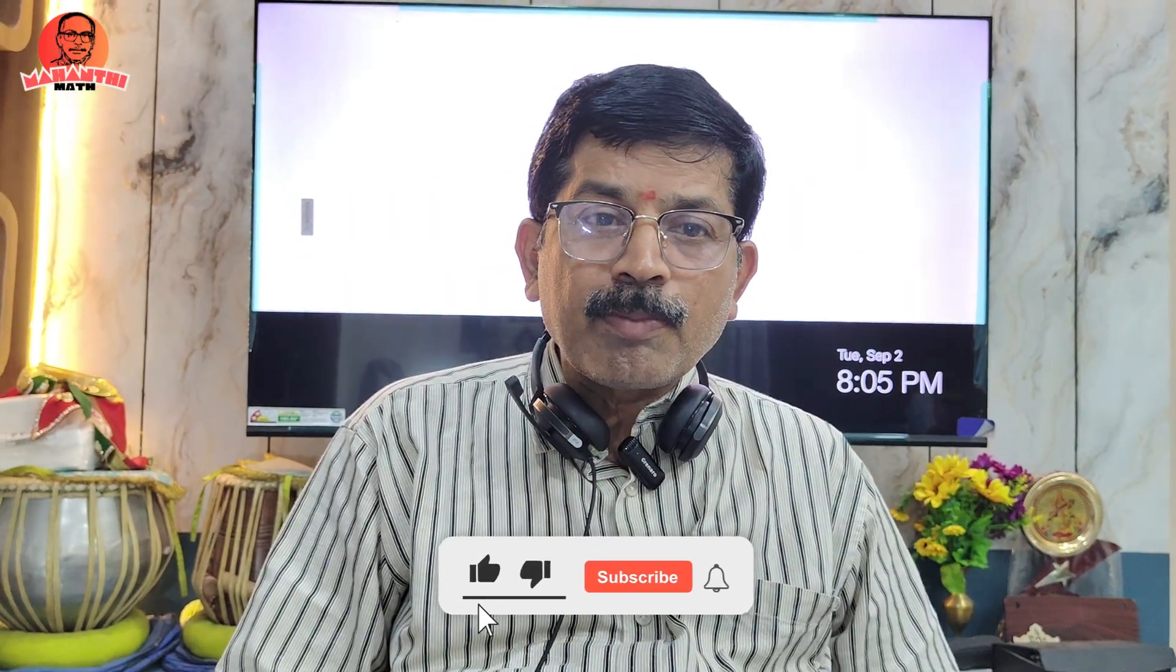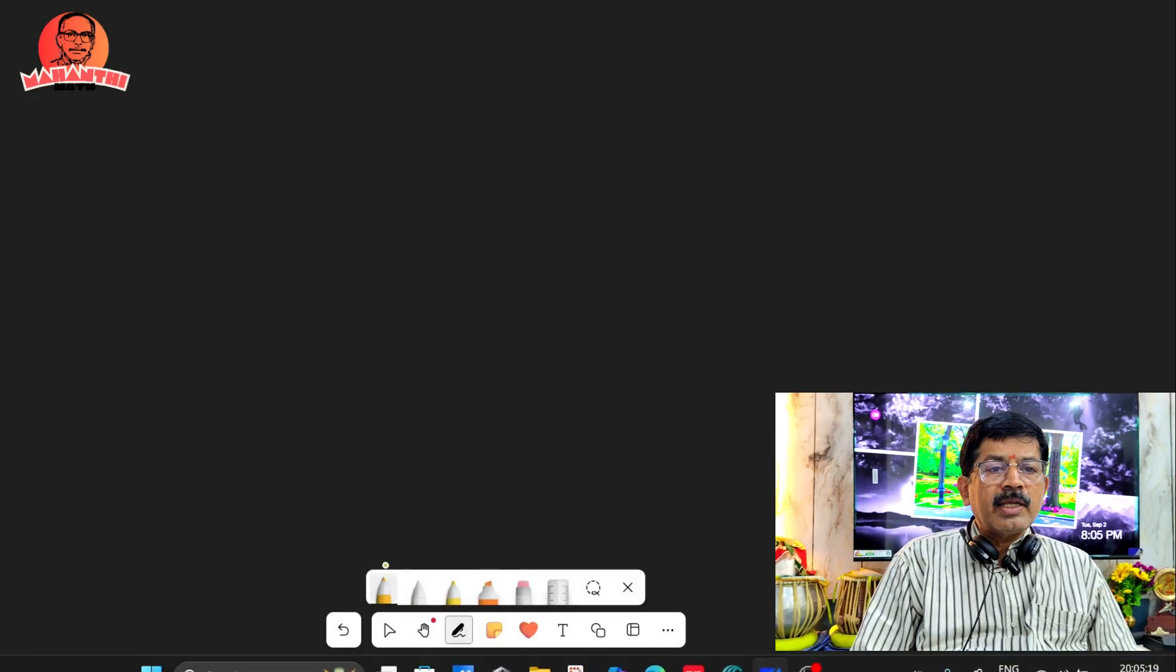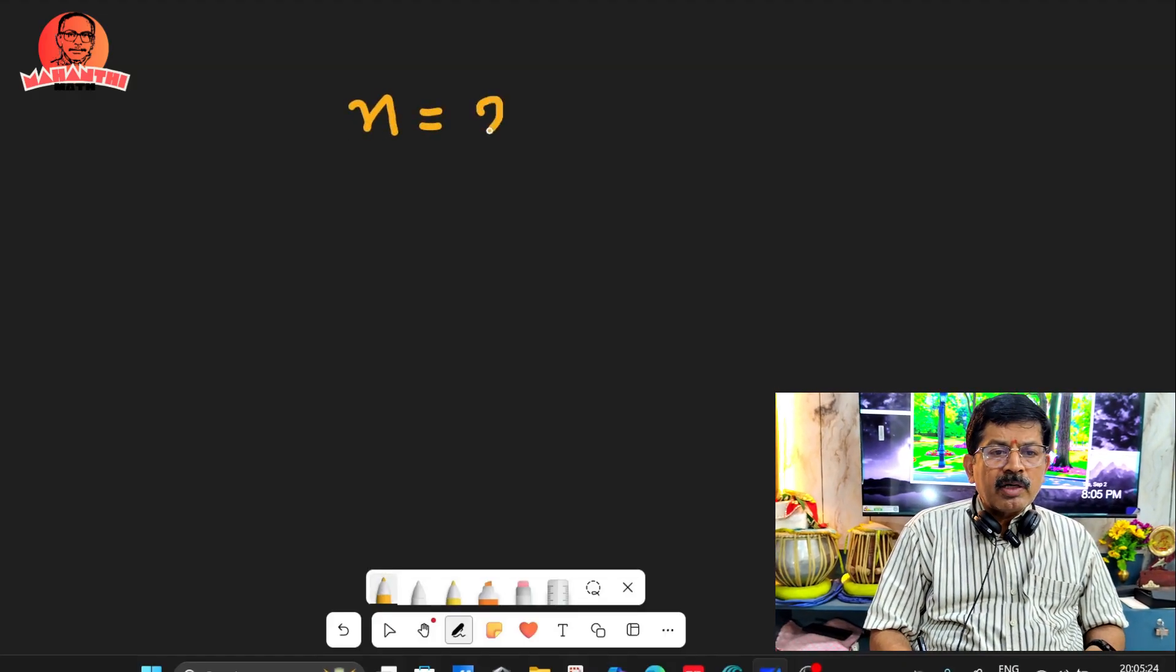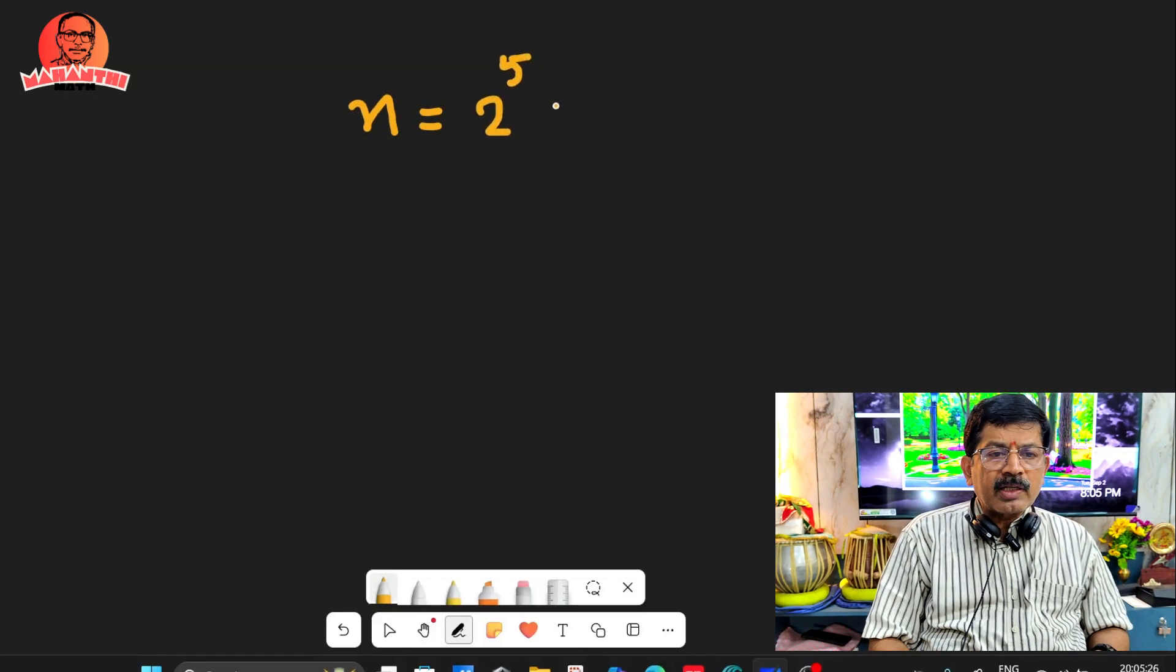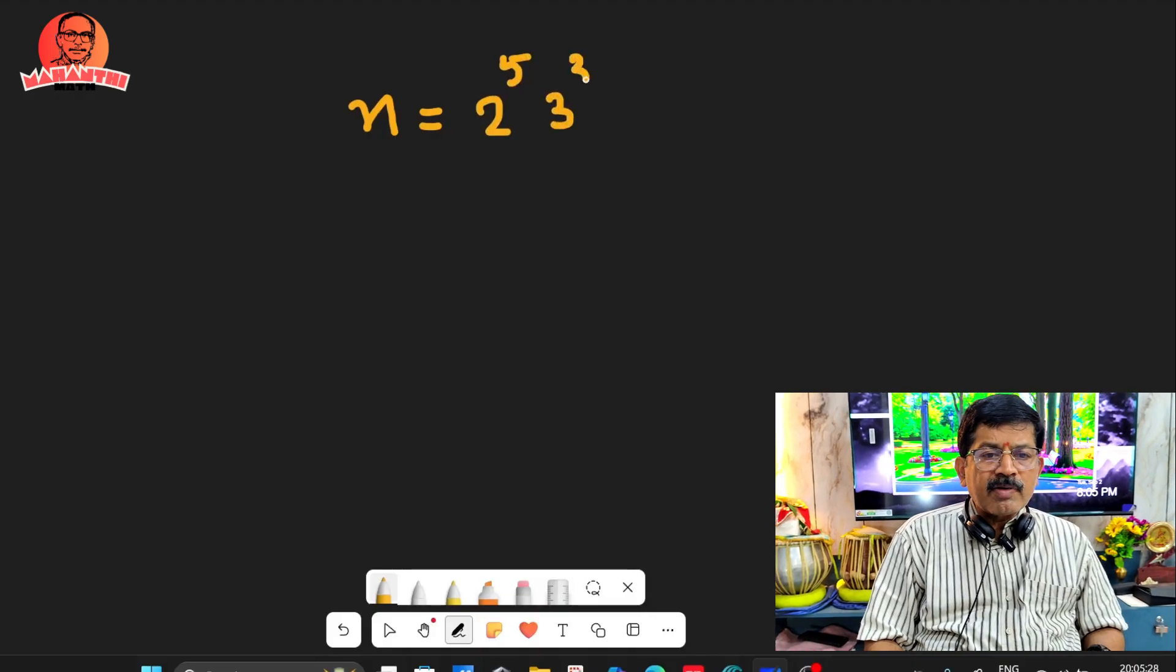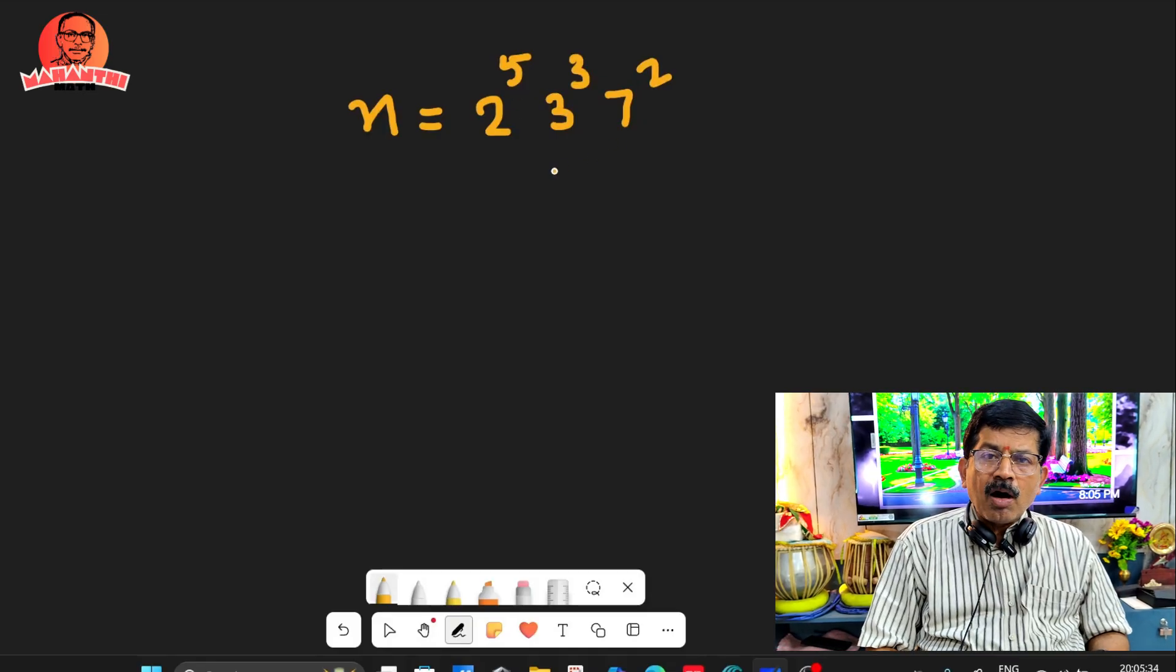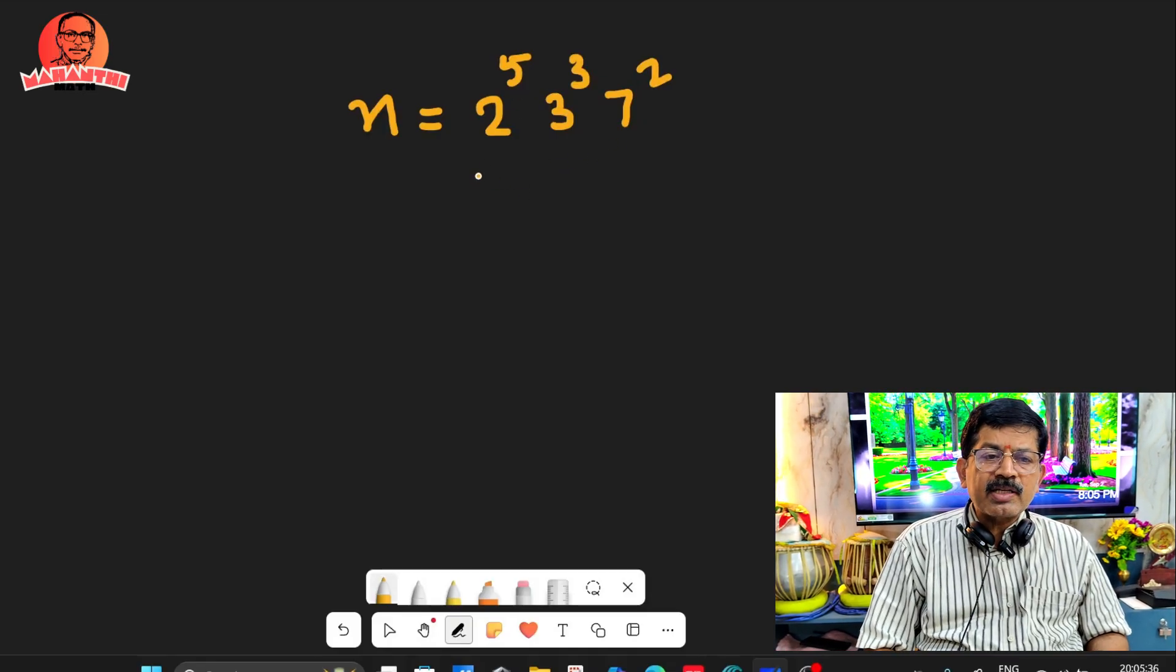One useful concept in number theory: suppose a number n is 2^5 × 3^3 × 7^2. If you multiply these, a very big number will come. The question is, how many positive divisors are there for n?